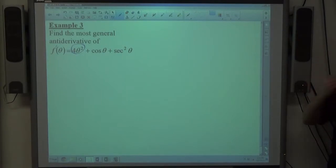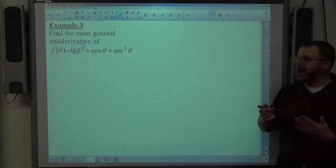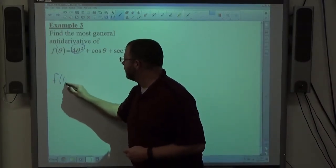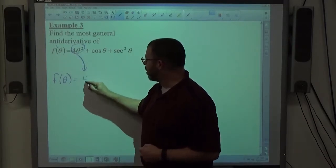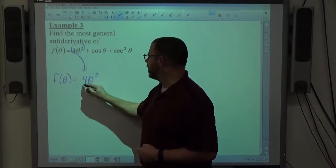That's just a power function. It's something raised to a power, so it's the power rule. So if I go f of theta equals, this is just going to be 4, we're going to raise theta's power by 1 and divide by the new power.